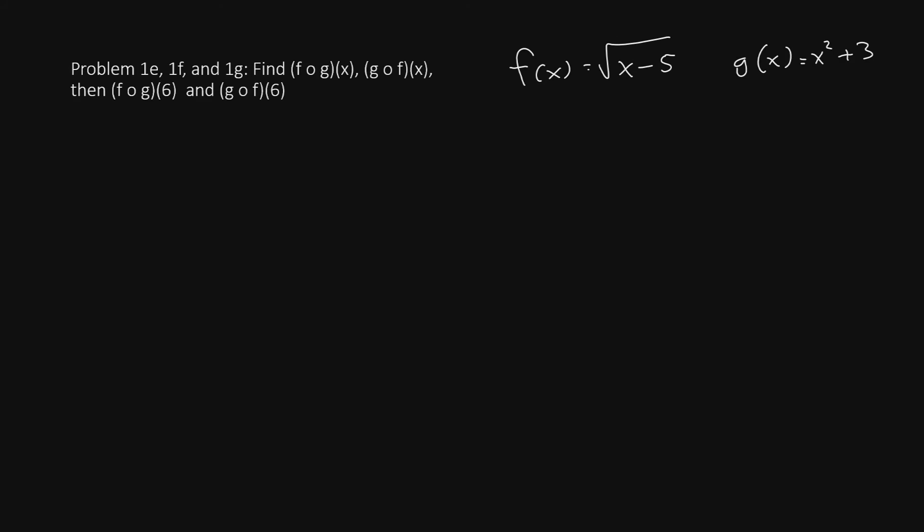So that's how we find f over g and g over f. Now we'll try a new variation for problem 1e, 1f, and 1g. This symbol in between the f and the g is called the composition symbol. To find f composite g, we are going to begin with function f and replace all the x's with the next letter in the chain, that's g.